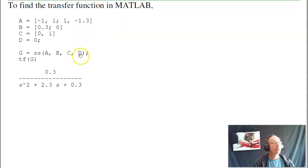To find the transfer function in MATLAB, once I get it in state space form, I can input the system using SS command. Then once I have G, what is the transfer function? In this case, it's 0.3 over S squared plus 2.3S plus 0.3.